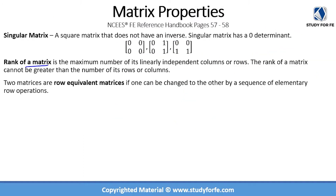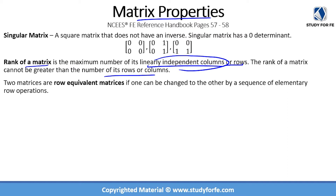Rank of a matrix was discussed in the previous lecture but I will quickly recap here because it will be relevant for matrix properties. Rank of a matrix is the maximum number of its linearly independent columns or rows. Rank of a matrix cannot be greater than the number of its rows or columns — at best it would be equal to them. Linearly independent rows means that the row in question is not a scaled version of any other row and cannot be obtained by row operations on a combination of other rows. A previous example showed how one row could be obtained from operations on the other two rows, so that third row was not independent.